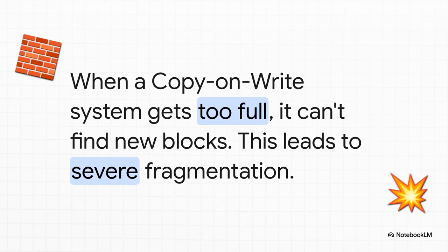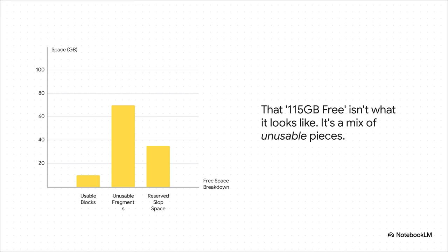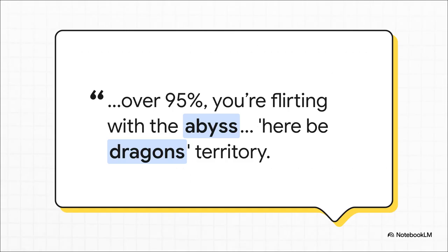Think of it like trying to park a giant truck in a parking lot that's almost full — you can only find tiny, single spots. This leads to severe fragmentation and the whole system just starts to grind to a halt. That 115 gigabytes free that zpool list was so happy about? It turns out that number is kind of a lie. As you can see here, that free space isn't one big, open area — it's a complete mess of tiny, unusable fragments, those single parking spots, plus some reserve space ZFS needs just to operate. ZFS can count up all those little pieces and say 115 gigs, but it can't actually use that space to write any new, reasonably-sized files. As someone in the source material put it: pushing ZFS over 95%, you're flirting with the abyss — you've literally gone off the map and into here-be-dragons territory. The normal rules just don't apply anymore.